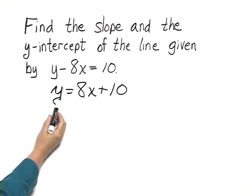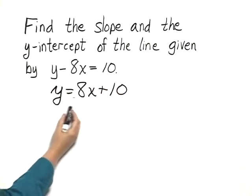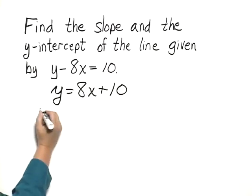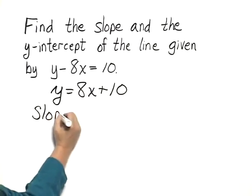When we solved for y, we can read the slope and the y-intercept directly from the equation. The slope is the number that's multiplied by the x, so the slope is 8.